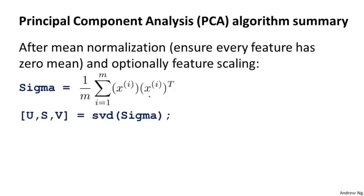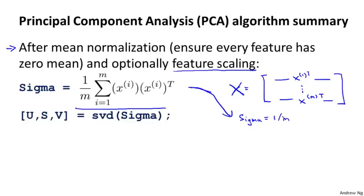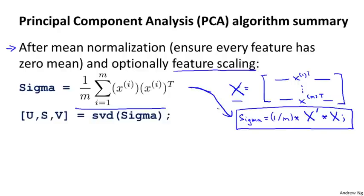To summarize, here's the PCA algorithm on one slide. After mean normalization — ensuring every feature is zero mean — and optionally feature scaling, which you really should do if your features take on very different ranges of values, we compute the covariance matrix sigma. If your data is given as a matrix X with rows x1 transpose down to xm transpose, this covariance matrix has a nice vectorized implementation: sigma equals (1/m) times X transpose times X.